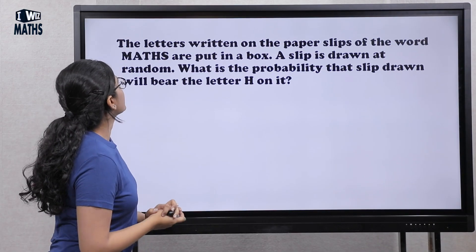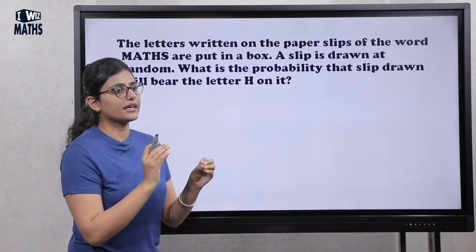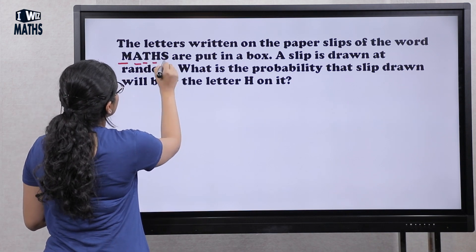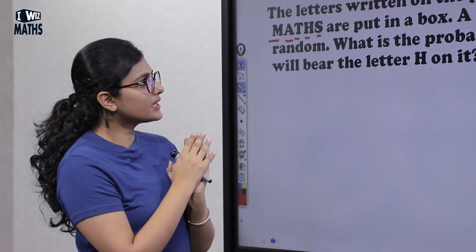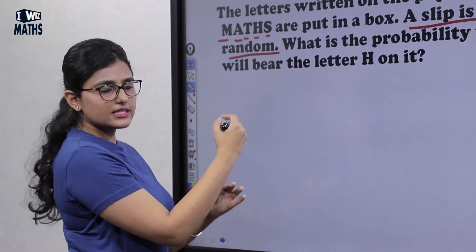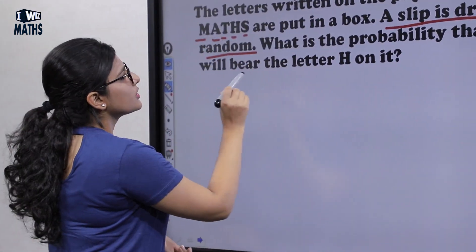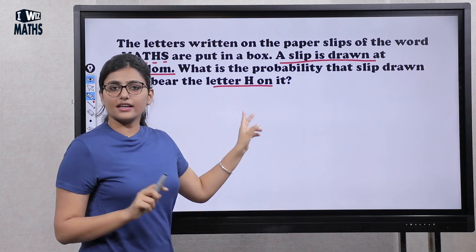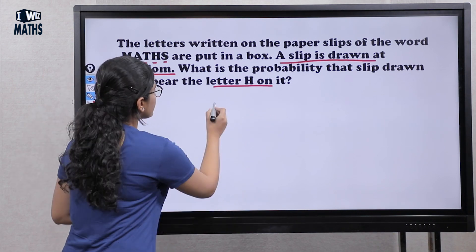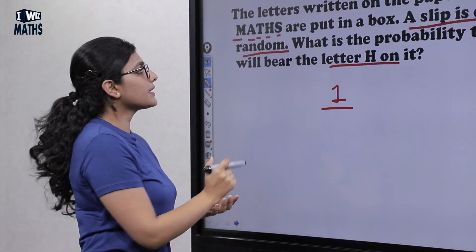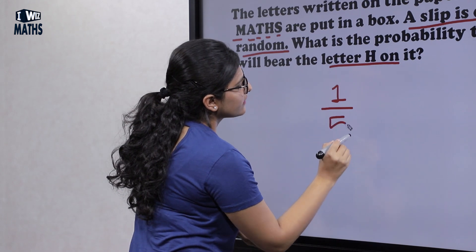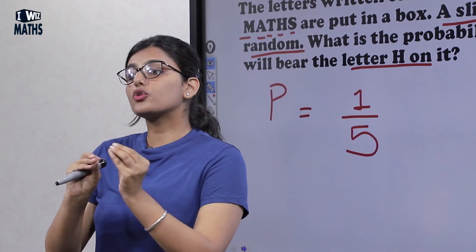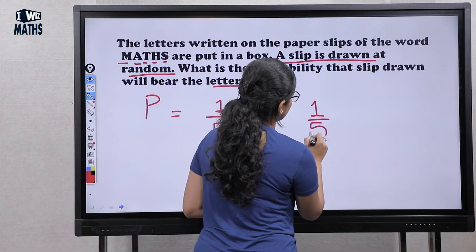The next question: the letters of the word MATHS — M, A, T, H, S — are written on paper slips and put in a box. A slip is drawn at random. What is the probability that the slip drawn will have the letter H on it? We need letter H, which is a single letter, so the favorable outcome is 1. The total outcomes are the 5 letters in MATHS: 1, 2, 3, 4, 5. So the probability is 1 by 5. Similarly, for any other letter like A or T, the probability is also 1 by 5.